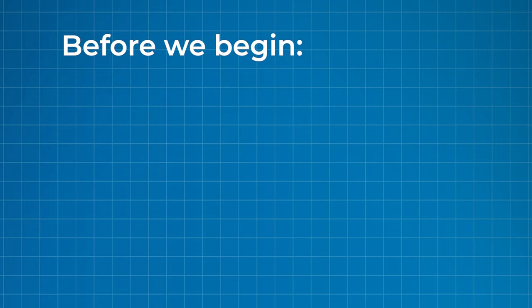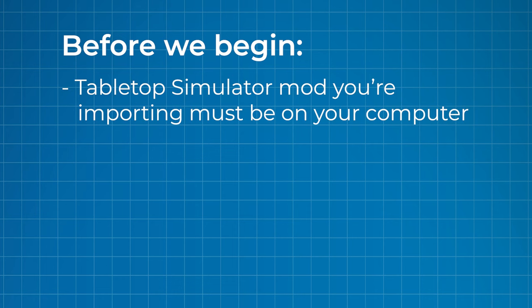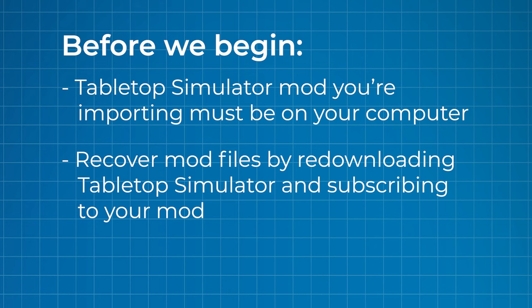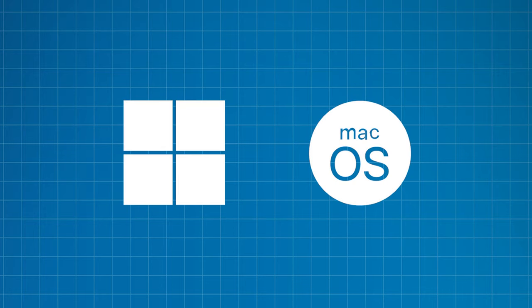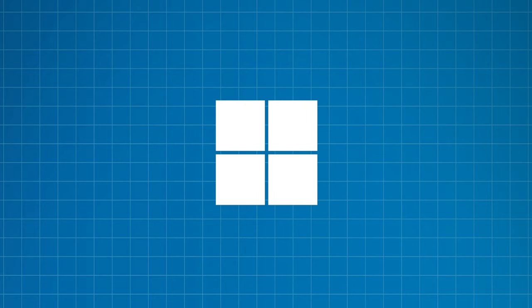Before we begin, it's important to call out a few key points. In order for the TTS Importer to work, you'll need to have the Tabletop Simulator mod you're importing still on your computer. If you no longer have TTS installed but you've uploaded your mod to Steam Workshop, you might be able to recover those files by re-downloading Tabletop Simulator and subscribing to your mod. In this video, I'll cover how to use the TTS Importer on Windows and macOS. Let's start with Windows.